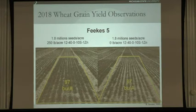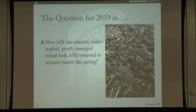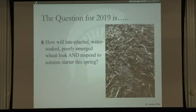This was planted around September 24th. At normal population we saw about a 10-bushel increase. The question for 2019 is how a late-planted, water-soaked, poorly-emerged wheat stand will respond to autumn starter this spring — we should get a great comparison between fall 2018 and fall 2017. Last year, we planted on time, everything emerged in three days, then five inches of rain came and everything died in the next four days. We planted again, waited weeks, Turkey Day came, wheat came through, then wind came and desiccated it.